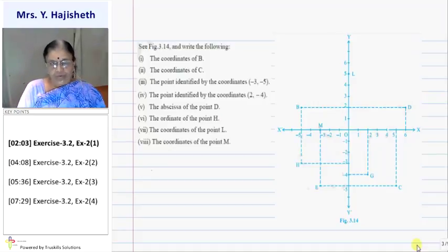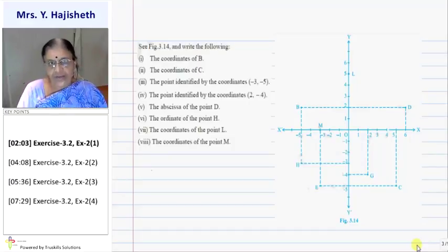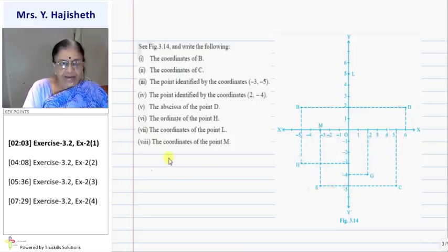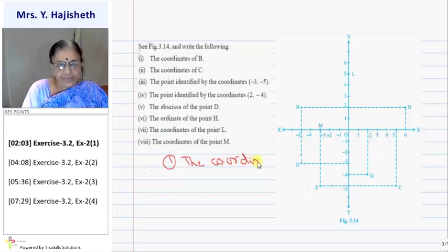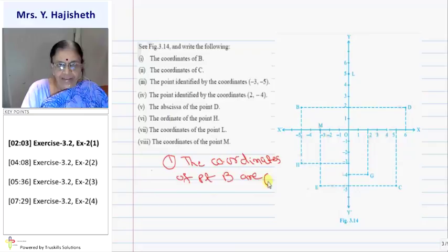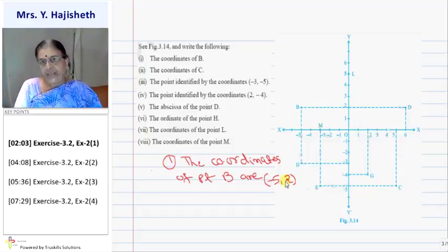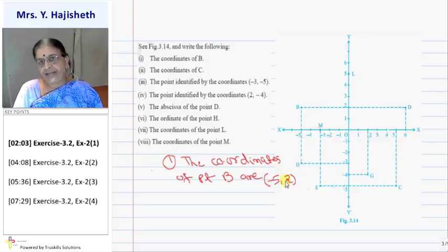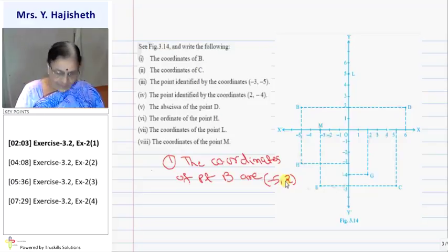The coordinates of point B are (−5, 2). The distance of point B from the y-axis is 5, and from the x-axis is 2, but it is in the second quadrant — so the x-coordinate is negative and the y-coordinate is positive.